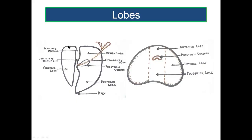So the anterior lobe is in front of the urethra, the median lobe is above and medial to the prostatic utricle and ejaculatory ducts behind the prostatic urethra, and the posterior lobe in the midline connects the two lateral lobes. When we look at a coronal section or a transverse section, this is what it appears like.